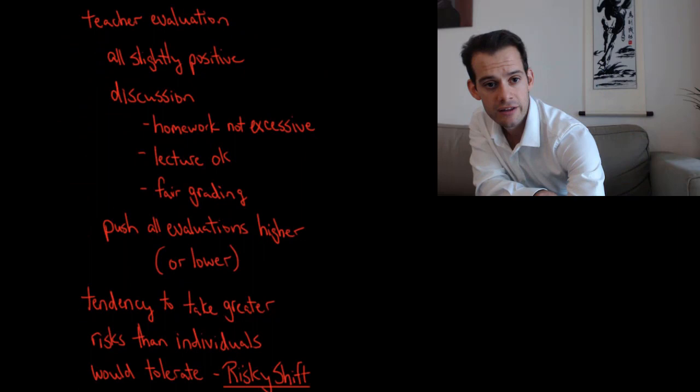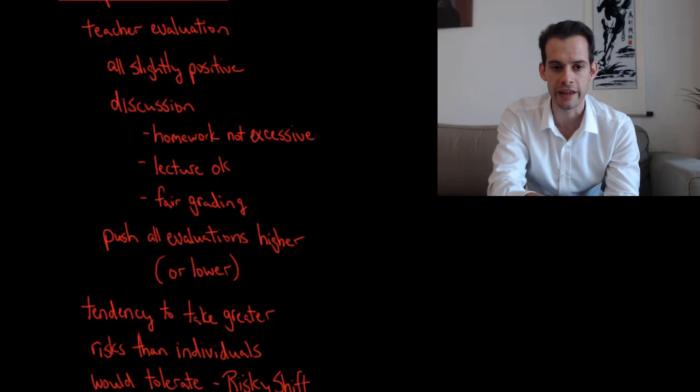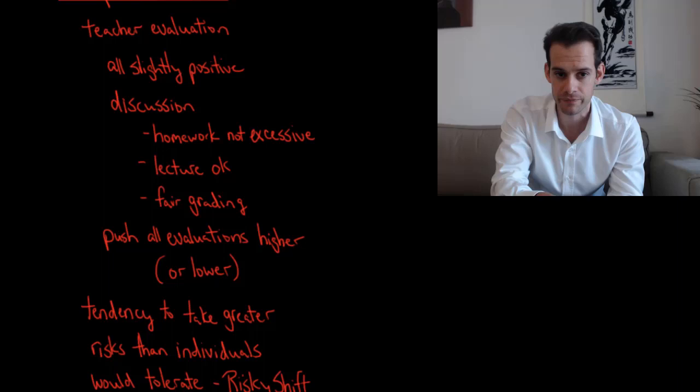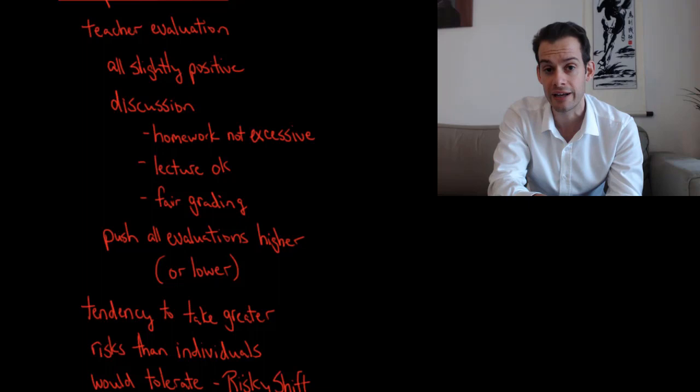One way we could think about this happening is to imagine that we're evaluating a teacher for a class. Now one way we could look at this evaluation would be to have all the individuals fill out an evaluation and we could just look at the average of those individual scores. And let's imagine a class where we did that and all of the students have a slightly positive view of the class. But we can also imagine what would happen if we put all of these students together into a group to make a decision about the class.